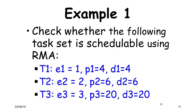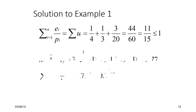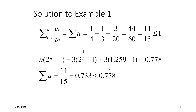One assumption about RMA is that the deadline is equal to the period. If the deadline is more than the period, it induces buffering and is not practical. Cases where the deadline is less than the period are handled by another class of algorithms called DMA, which we will study in the next lecture. For now, we assume period and deadline are the same. If the utilization is less than or equal to 1 and satisfies the RMA bound, the task set is RMA schedulable — priority is proportional to frequency, or 1 over the time period.